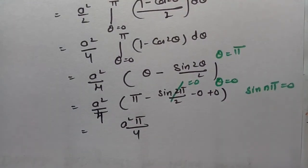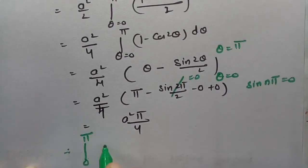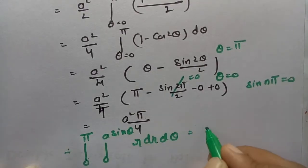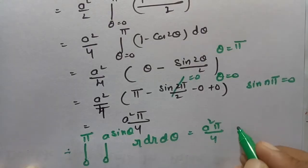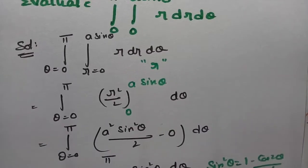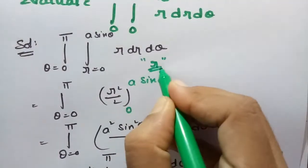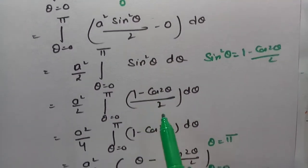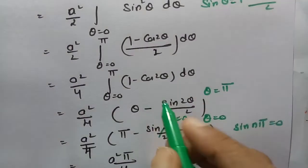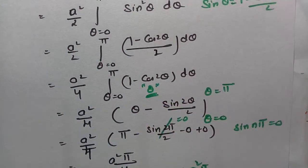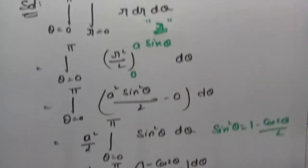So this is how we have to solve. Therefore integral 0 to pi, integral 0 to a sin theta, r dr d theta, value is nothing but a squared pi by 4. First of all I made integration with respect to r, and after substituting the limits, I made integration with respect to theta and substituted the limits and I got the value as a squared pi by 4.